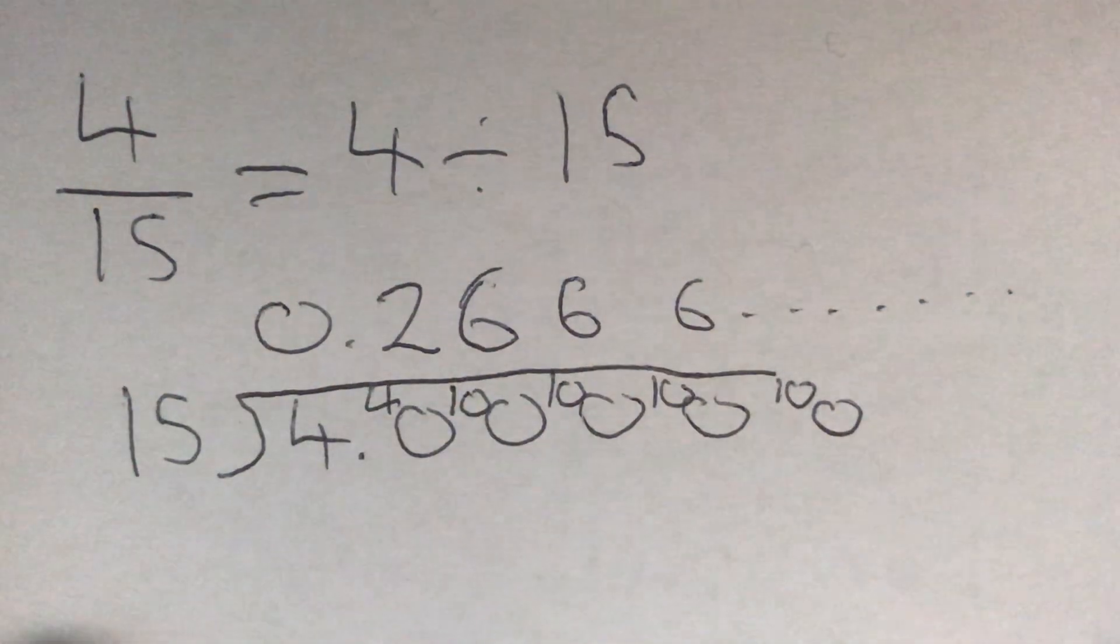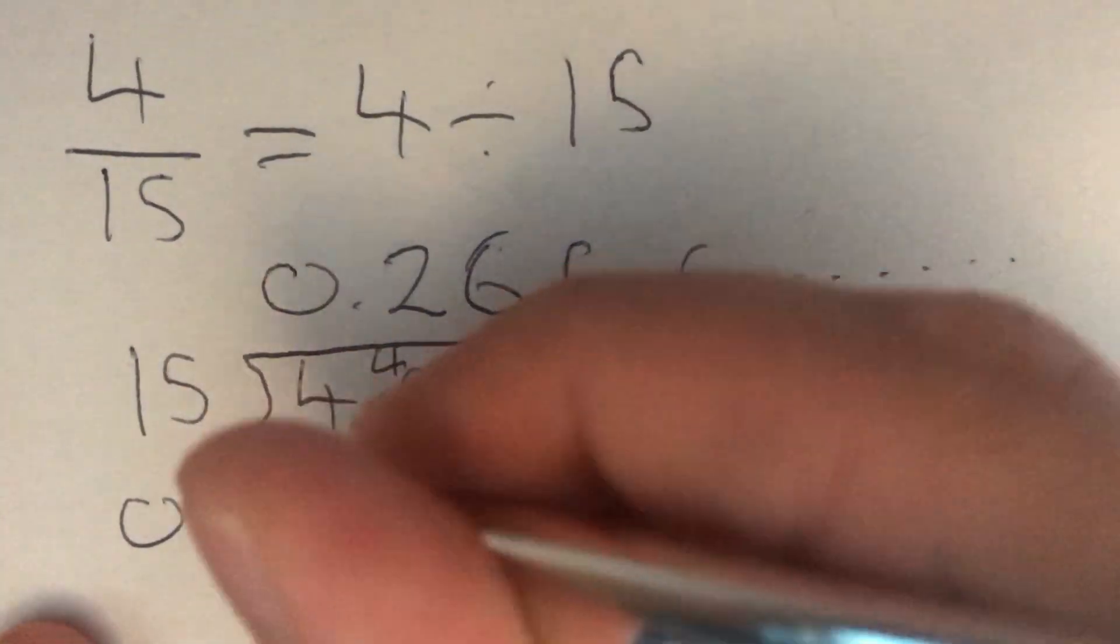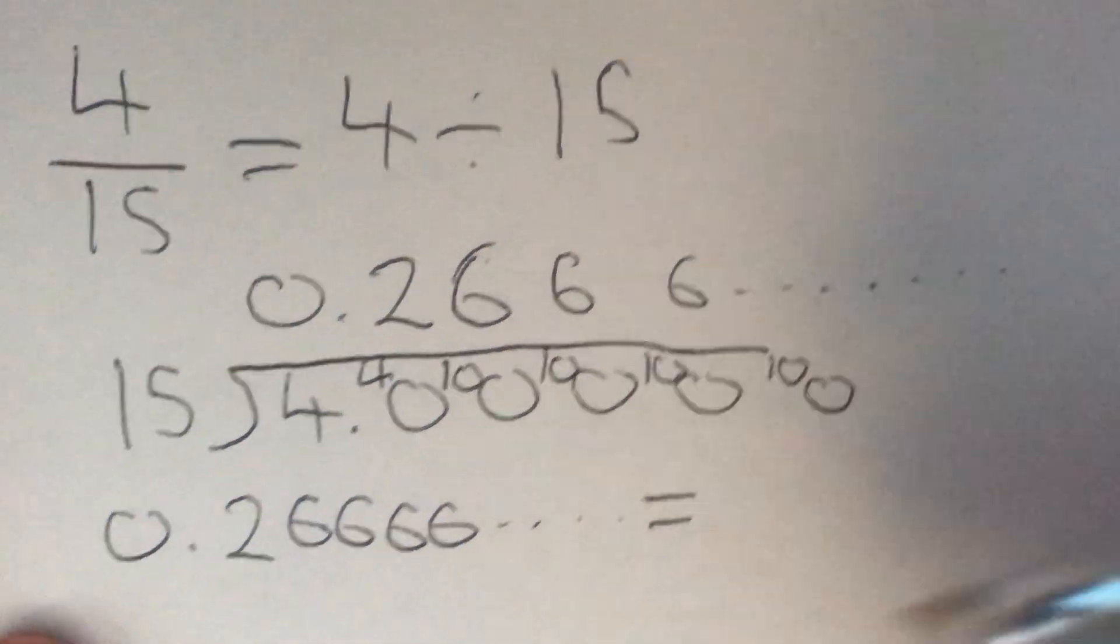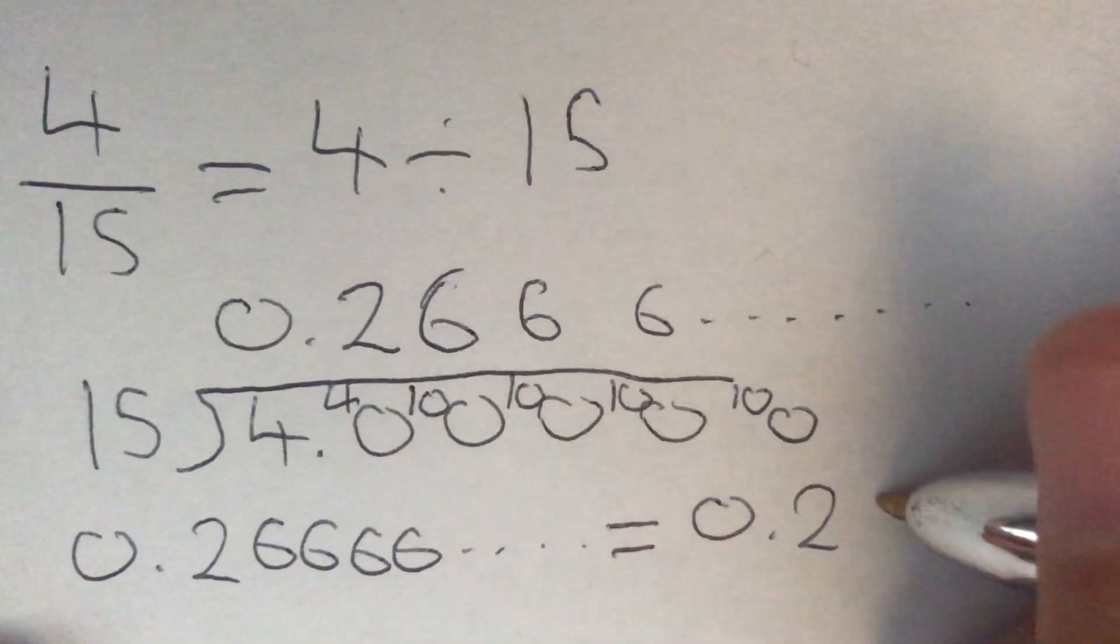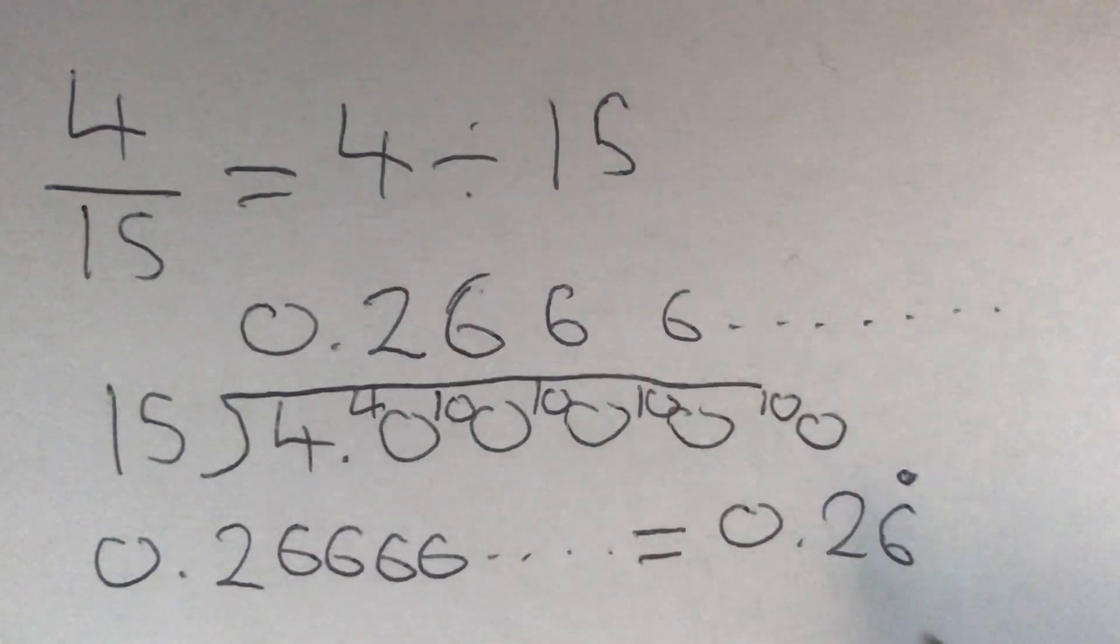So this 6 is just going to keep going. So to write out the 0.26666 and so on, we write it as 0.26 with a dot over the 6. So that dot over the 6, our recurring dot, tells us that that 6 is going to go on forever. And that is our answer.